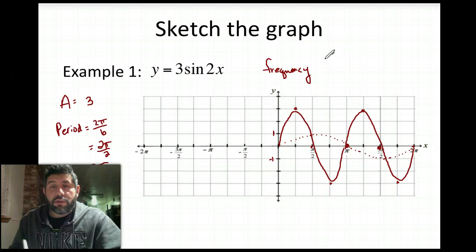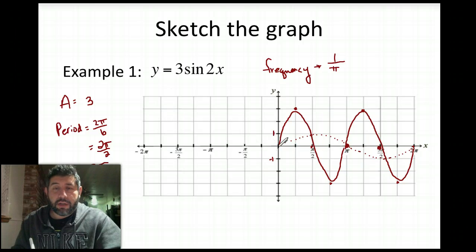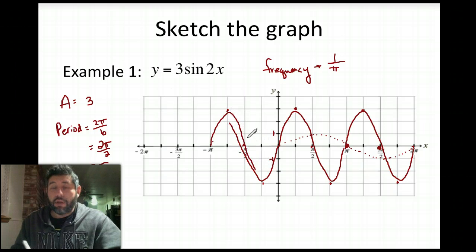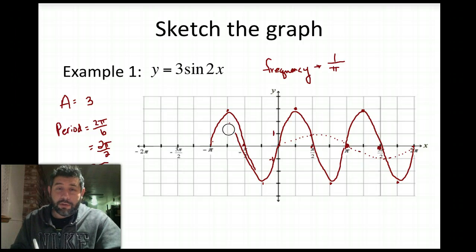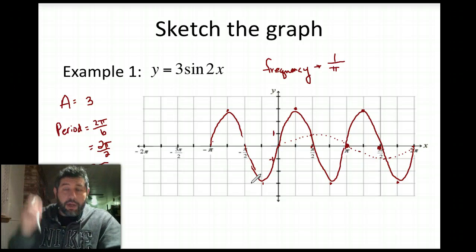And that gets us into another vocabulary we'll call it frequency. And frequency is the reciprocal of period. So where my period is pi, my frequency is 1 over pi. It just means this is the number of cycles in pi. So I got one cycle in pi radians. And I can continue this on the opposite side as well, down through here, and so forth.